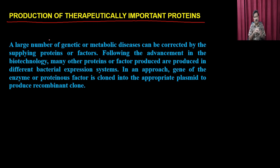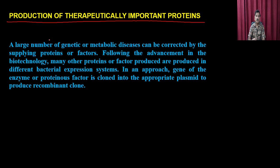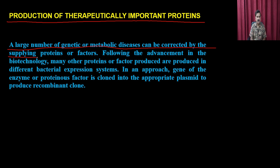There are two options: you can clone the gene into the host so that the host automatically produces the protein, or in cases where that is not possible, you produce the protein in another host, purify it, and supply the purified protein. A large number of genetic or metabolic diseases can be corrected by supplying proteins or factors. Following advancements in biotechnology, many proteins or factors are produced in bacterial expression systems.